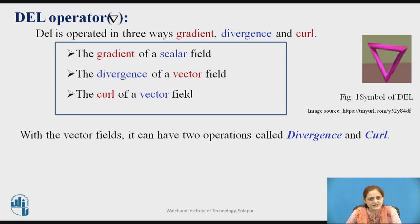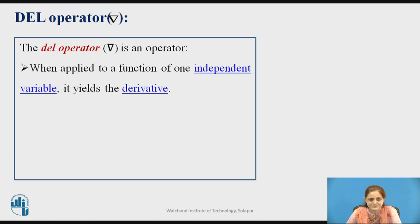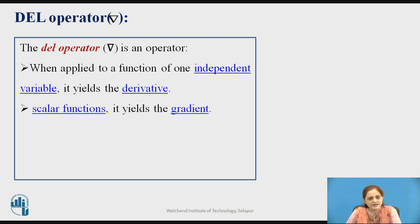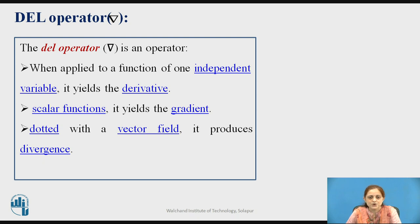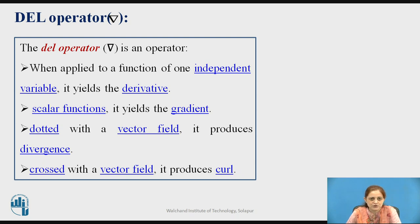With a vector field, there can be two operations: divergence and curl. The del operator, when applied to a function of one independent variable, yields the derivative. When it operates on a scalar function, it yields the gradient. When dotted with any vector field, it produces the divergence. When crossed with any vector field, it produces the curl operation.